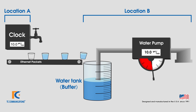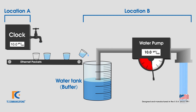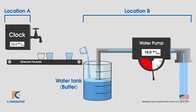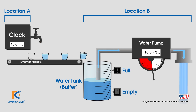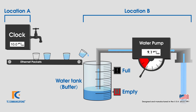To allow for a continuous flow, adding a water tank at location B that will fill to a certain level allows water to be drained from the tank at a steady rate, which compensates for the irregular flow provided by the buckets. In this case, the water tank acts as a buffer.